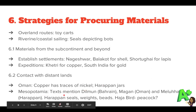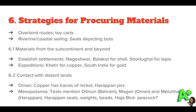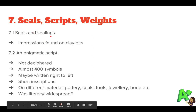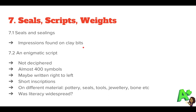Mesopotamian texts mention Dilmun (perhaps Bahrain), Magan (perhaps Oman) and Meluha, which we assume refers to the Harappan area. Harappan seals have been found in Mesopotamia, along with Harappan weights and beads. Mesopotamian texts also mention exotic birds, possibly the peacock, though that is extrapolated evidence. Seals and clay sealings were used to seal exported products so recipients could verify goods hadn't been tampered with.